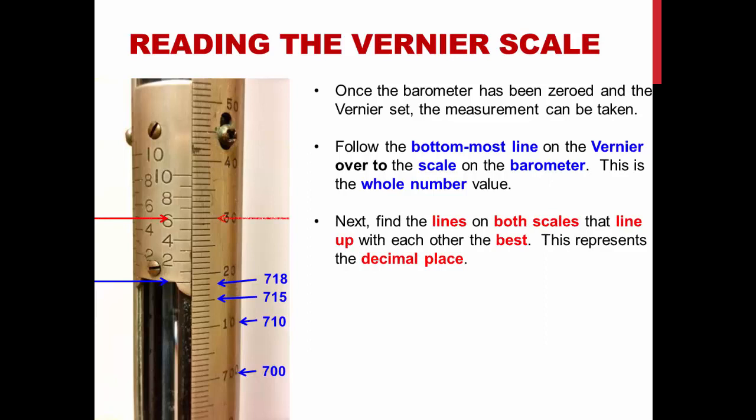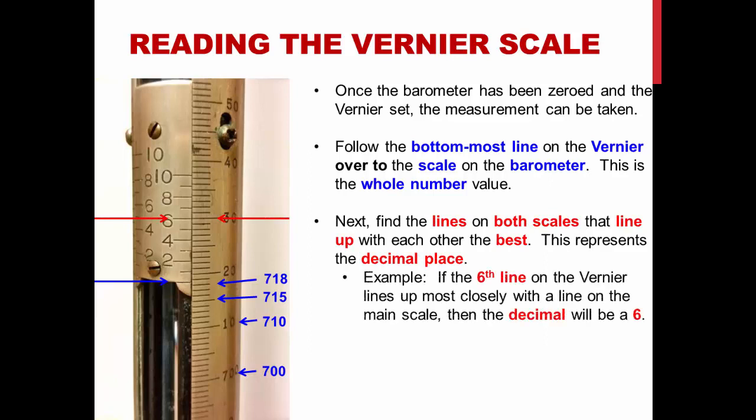Next, find the lines on both scales that line up with each other best. This represents the decimal place. For example, if the 6th line on the vernier aligns up most closely with a line on the main scale, then the decimal will be a 6. This barometer reads 718.6 mmHg.